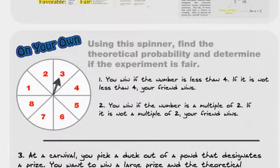Using this spinner, I want you to find a theoretical probability and determine if the experiment is fair. So do this. If you win the number, it's less than four. And you don't win, your friend wins, if it is not less than four. First of all, tell me the theoretical probability for each of them. And then tell me if the experiment is fair. Second experiment is you win if the number is a multiple of two or your friend wins if it's not a multiple of two.